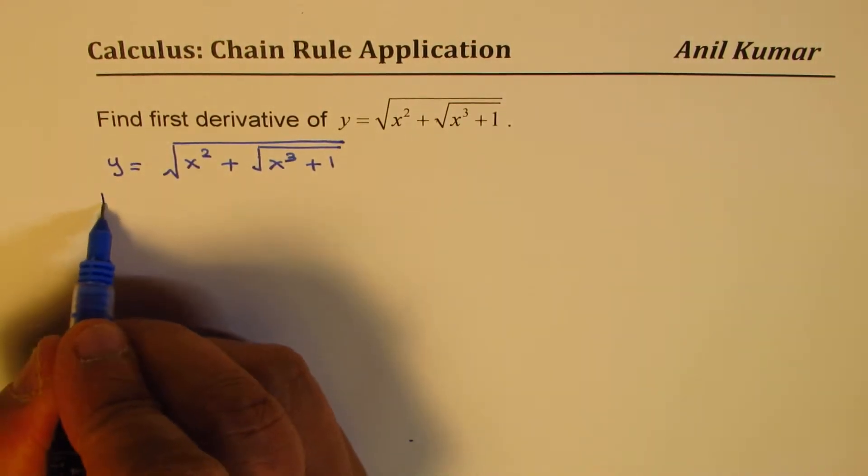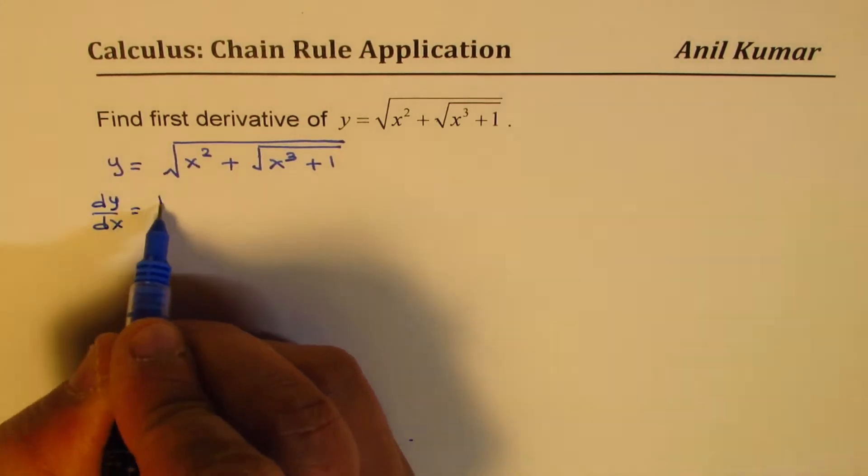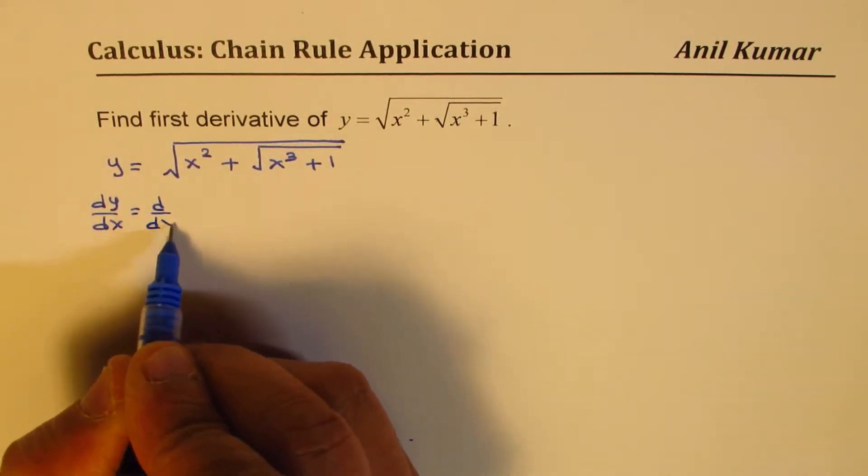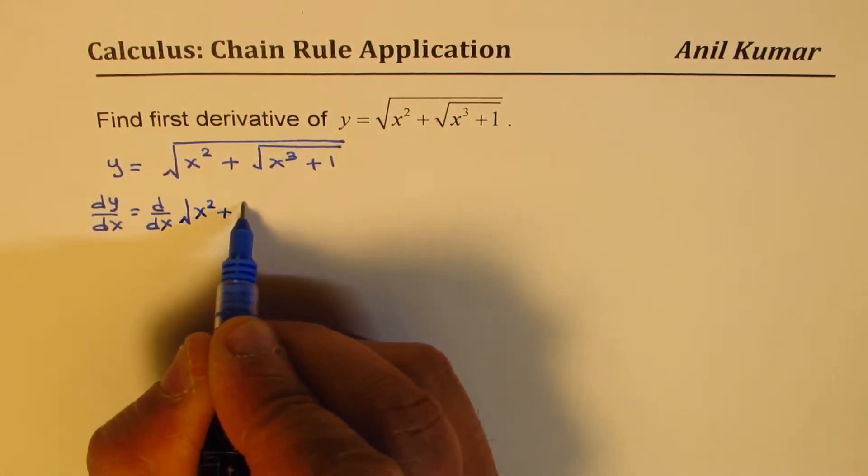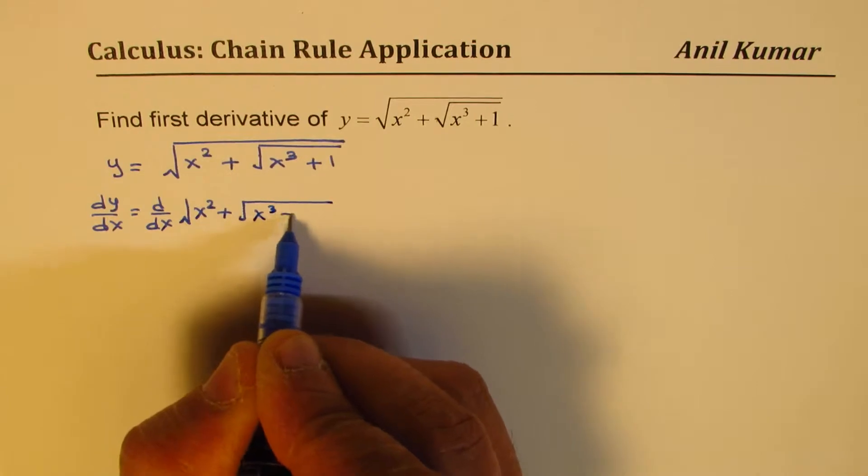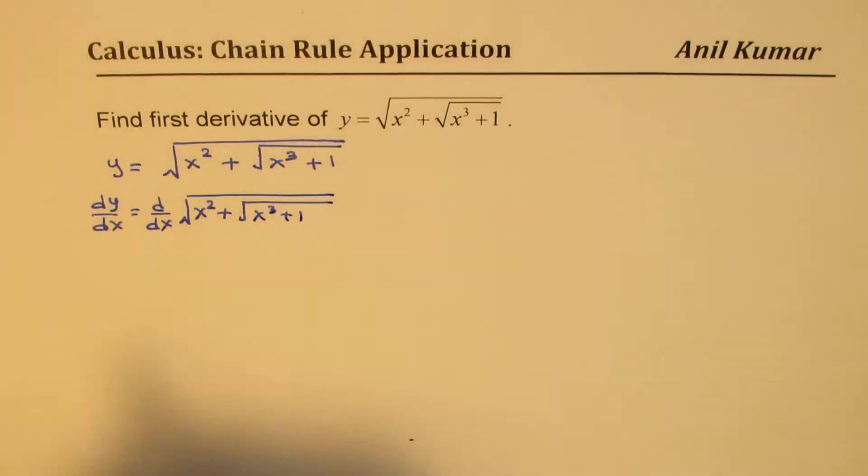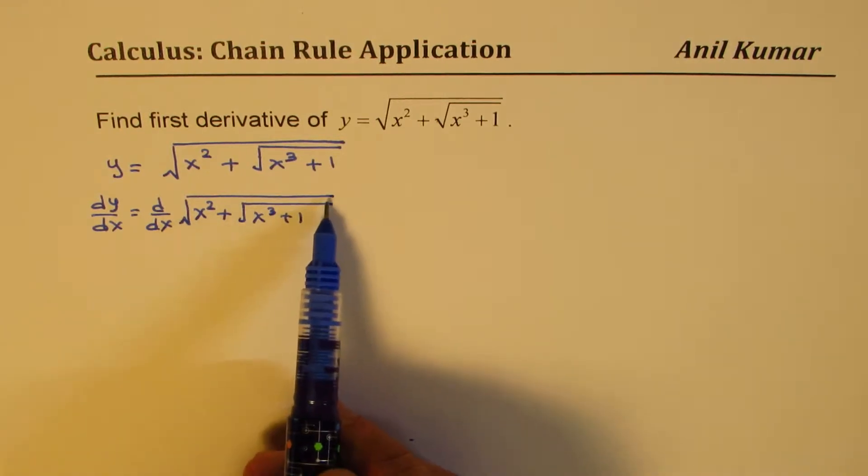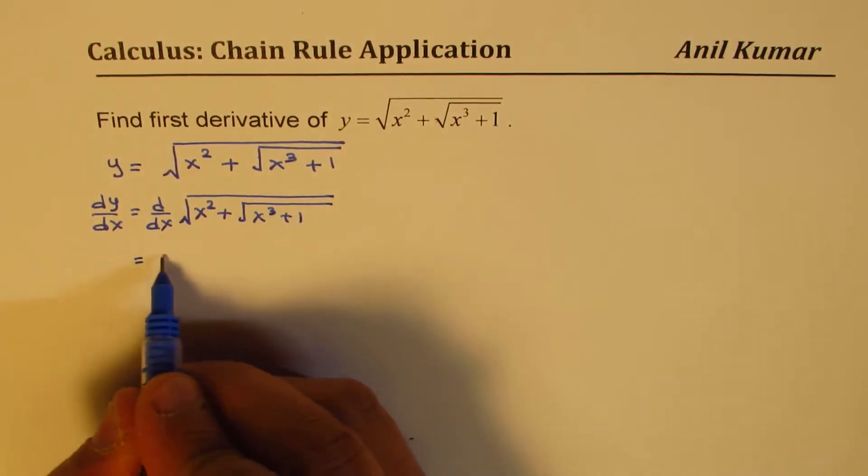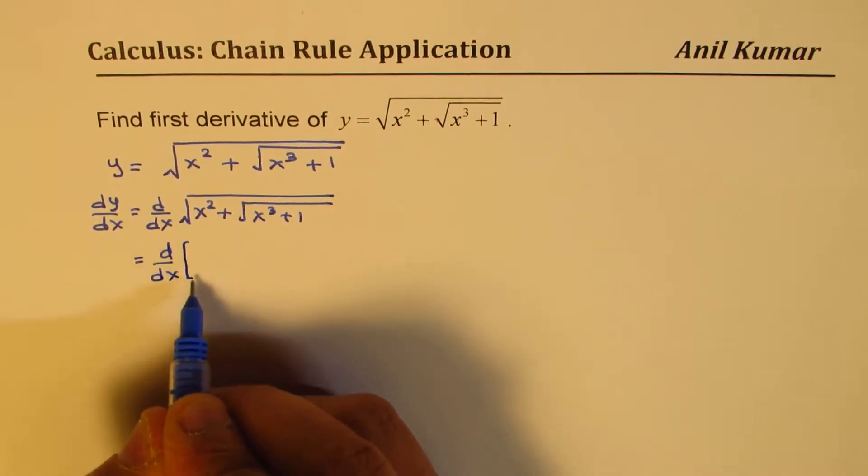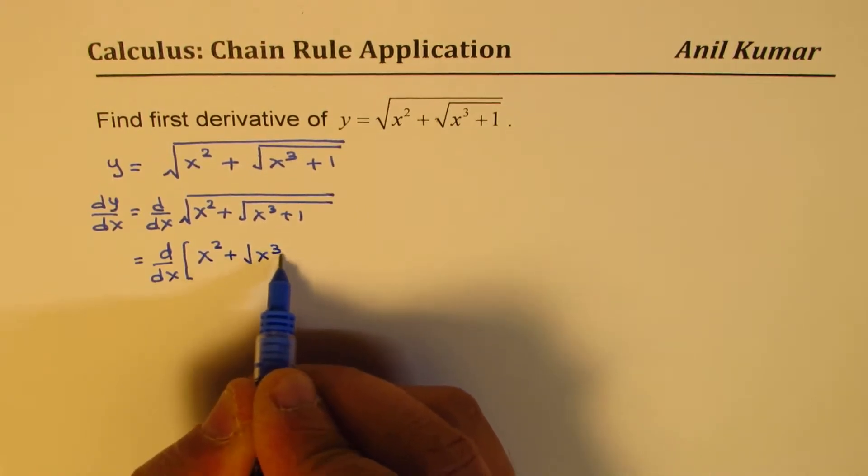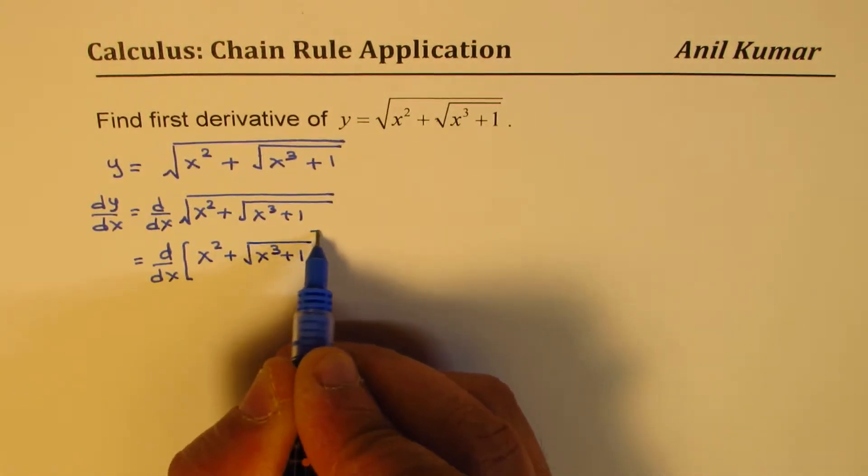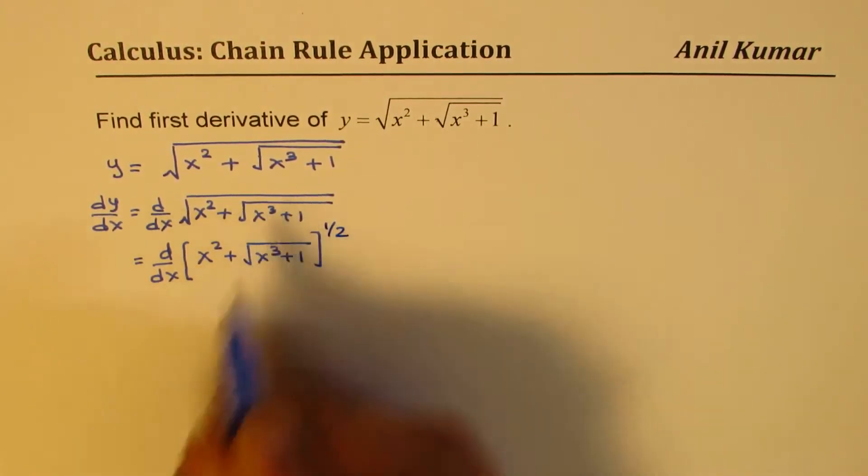The derivative dy/dx will be the derivative of this function which is square root of x square plus square root of x cube plus 1. As you can see we have to the power of half here, so I could actually rewrite this as derivative of x square plus square root of x cube plus 1 to the power of half. That is the meaning of square root.